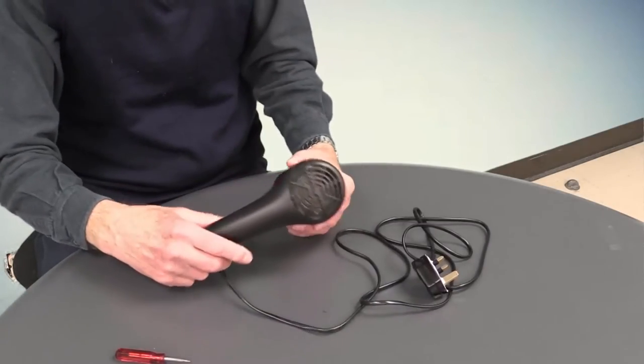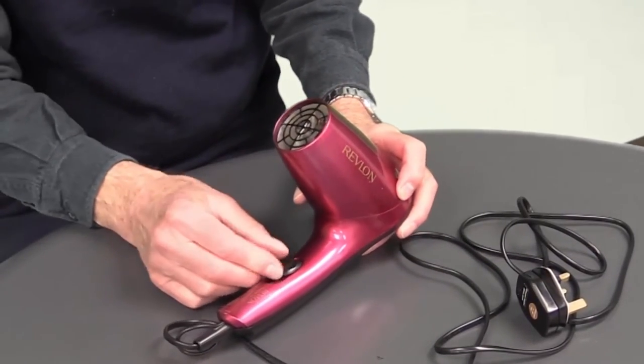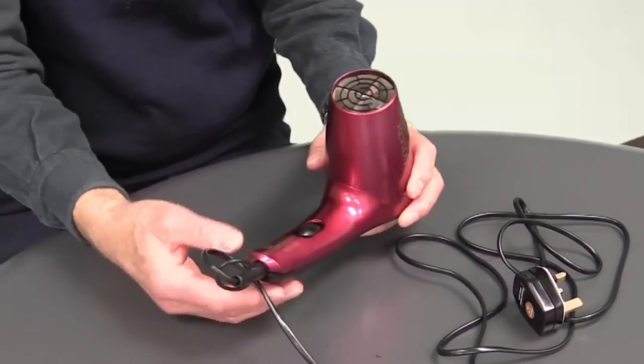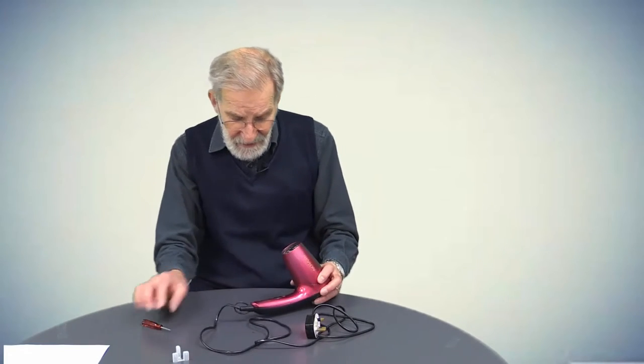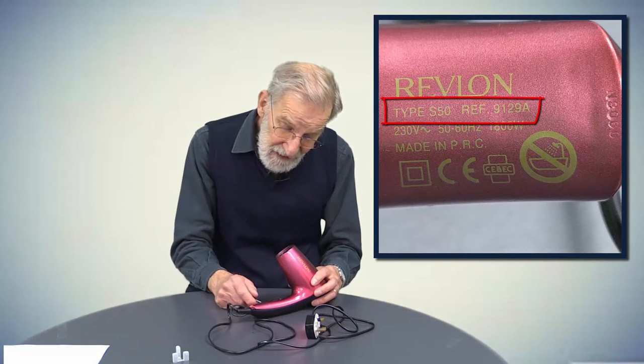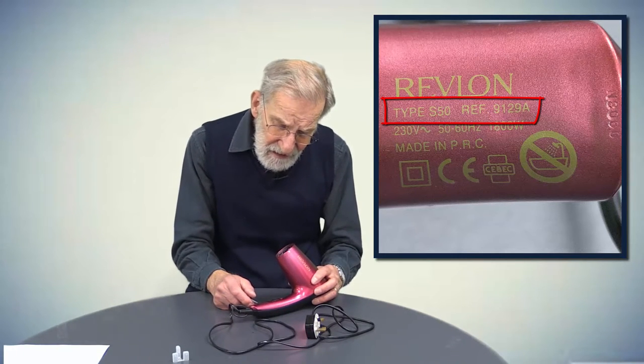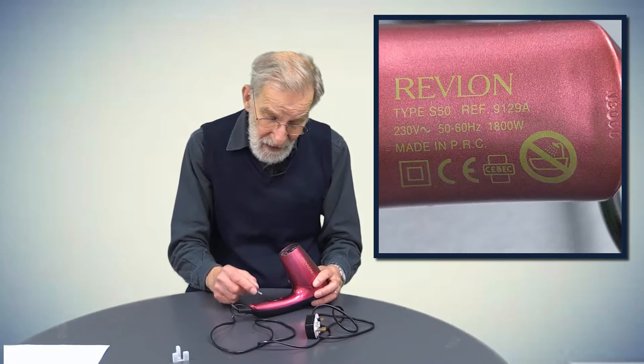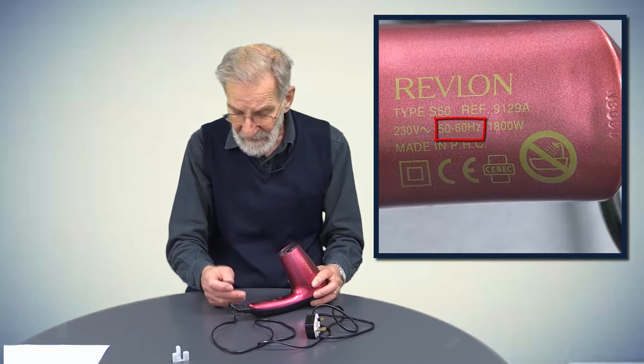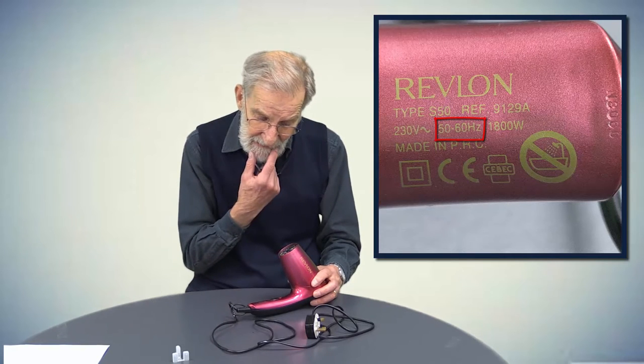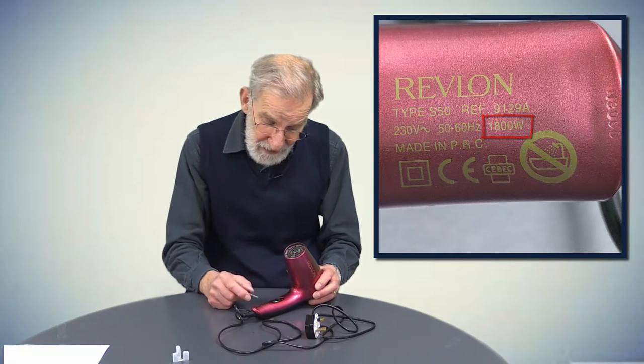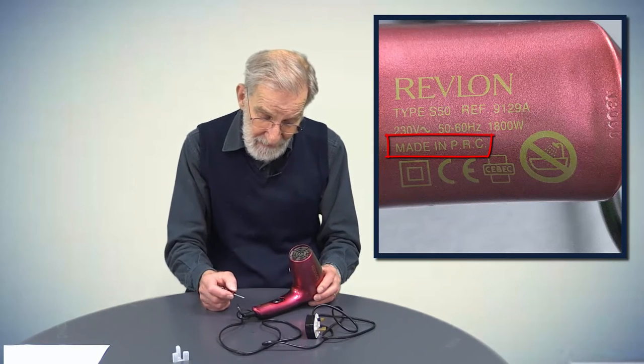Let's take a look at the hair dryer itself. It has three settings: two, zero, and one - a low, a high, and an off setting. What's printed on here says Revlon Type S50, reference 9129A model number. It says 230 volts with a squiggle which means alternating current, 50 or 60 hertz. In North America we use 60 hertz AC and in Europe it's 50 hertz. It says 1800 watts, a fair amount of power to put into a little item like this. Made in PRC, so it's made in China.